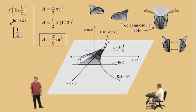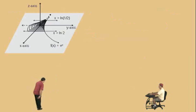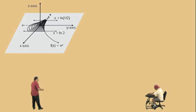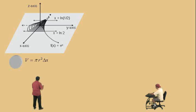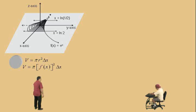Now that we're warmed up, let's do a tougher one. In this problem, we have to find the volume of the manifold. Remember, there are two separate pieces. We did circular cross-sections and defined the volume to be πr² Δx, where Δx is the width of the partitions perpendicular to the x-axis — and that's the case we have here. Our radius can be defined as f of x, which is e to the x.